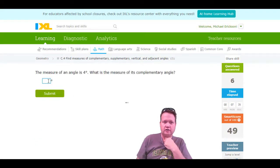The measure of an angle is 4. Its complement is going to make it up to 90, so that's going to be 86 degrees.